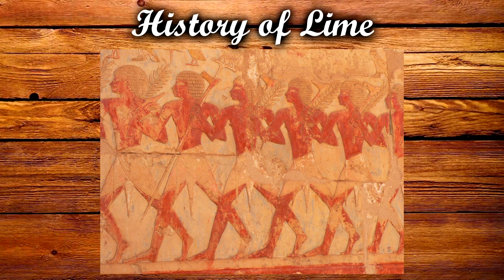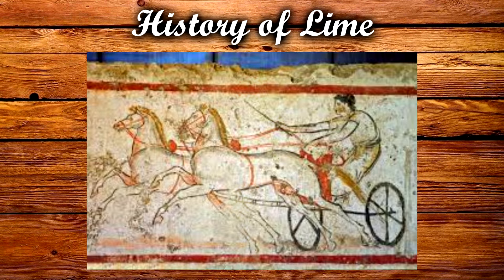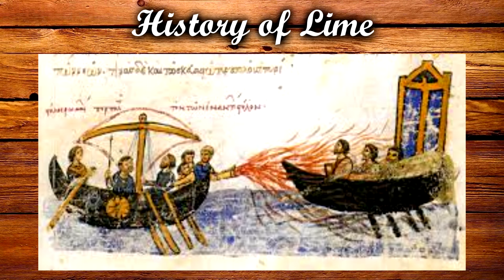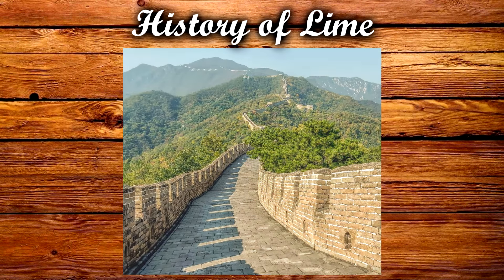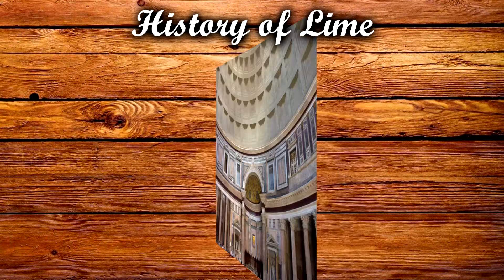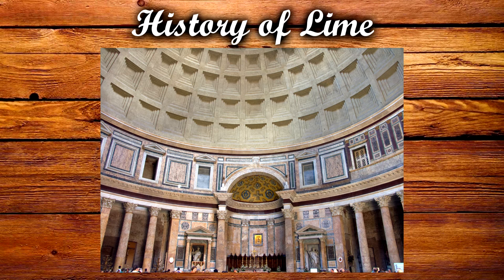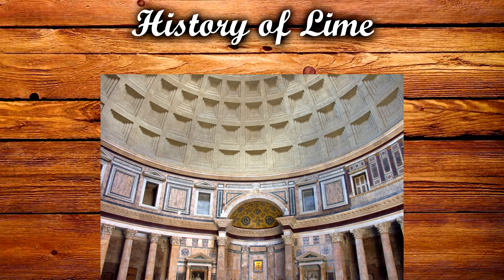Ancient Egyptians used lime to tan their skins. Lime colors were used in Greek frescoes and could have possibly been a component of Greek fire. The Chinese used lime mortar in the construction of the Great Wall. In Rome, in addition to using lime in construction, Roman women used unslaked lime to give their hair a light red hue.